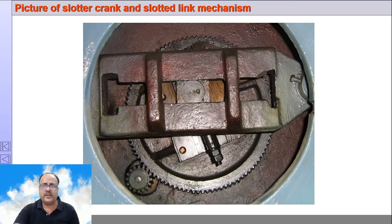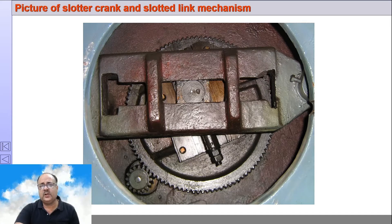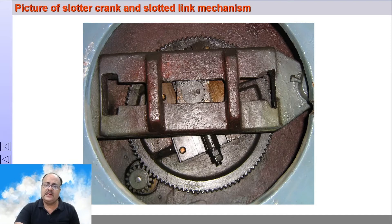This is the quick return mechanism. You can see this is the slotted link and this is the crank pin. This is the block fitted in the slot of the rocker arm. And this is the radial slide, the bull gear, and the pinion gear.